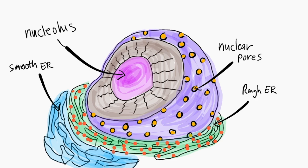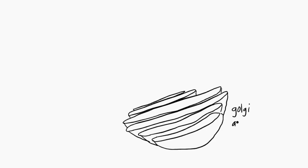One destination of these transport vesicles is the Golgi apparatus. The Golgi apparatus looks sort of like a cross-section of a stack of pancakes. Here is where proteins go to get their carbohydrate attachments, making them glycoproteins and glycolipids to be sent to the cell membrane. The Golgi apparatus handles the processing, packaging, and secretion of important substances and compounds.